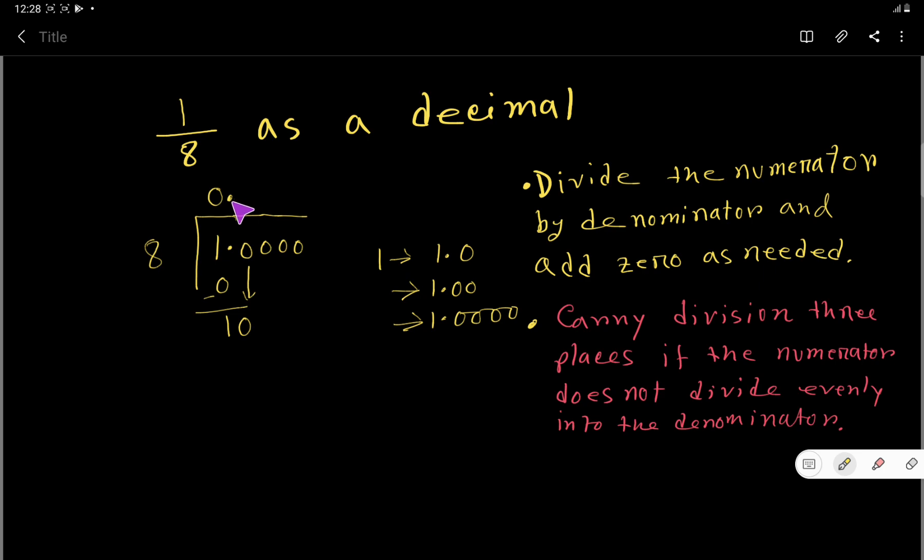So now, 8 goes into 10 how many times? We need the multiplication table. 8 times 1 is 8, 8 times 2 is 16. Just add 8 with this—16, which is greater than 10, so we have to stop here. Now 8 goes into 10 one time. 1 times 8 is 8.